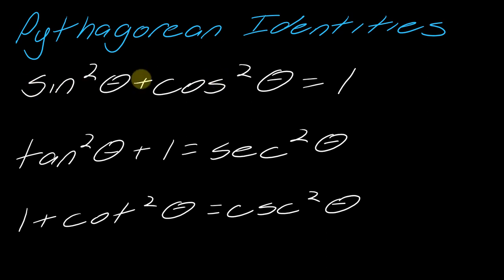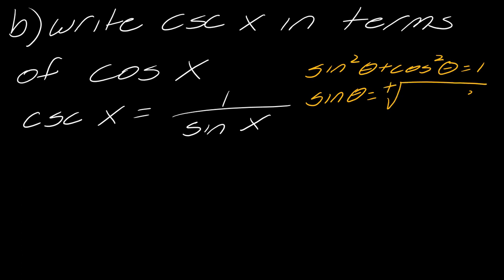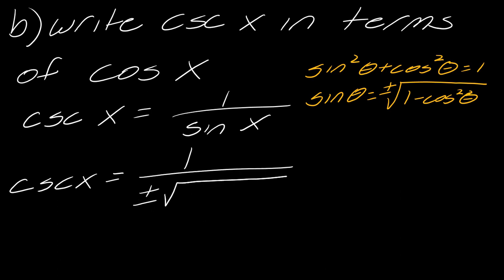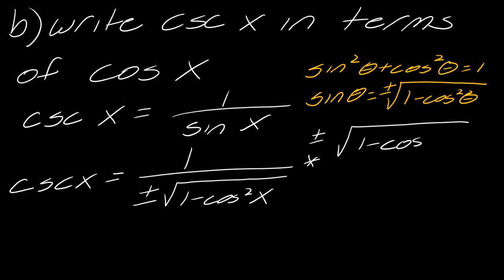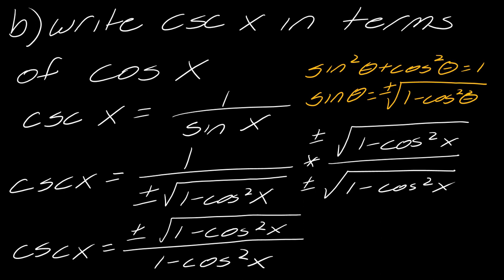I can rearrange sine squared theta plus cosine squared theta equals one to solve for sine: sine theta equals plus or minus the square root of one minus cosine squared theta. I can substitute that in for sine of x. And then the last thing you want to do is rationalize — multiply by that square root. So ultimately, cosecant of x equals plus or minus the square root of one minus cosine squared x, over one minus cosine squared x. And then we are done.